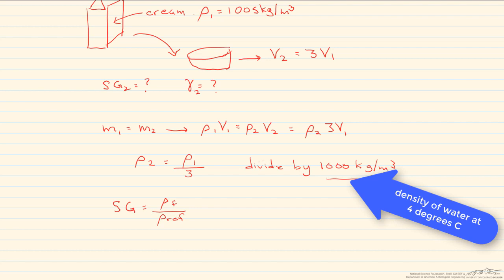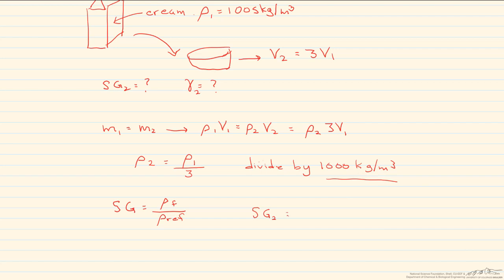So if we do that, if we divide both of those by a thousand kilograms per meter cubed, we get that the specific gravity of our whipped cream is equal to ρ₁ divided by a thousand kilograms per meter cubed. And this is divided by three. And so this is equal, since this is equal to one thousand five kilograms per meter cubed, the specific gravity of the whipped cream is equal to 0.335. And note that that is unitless.